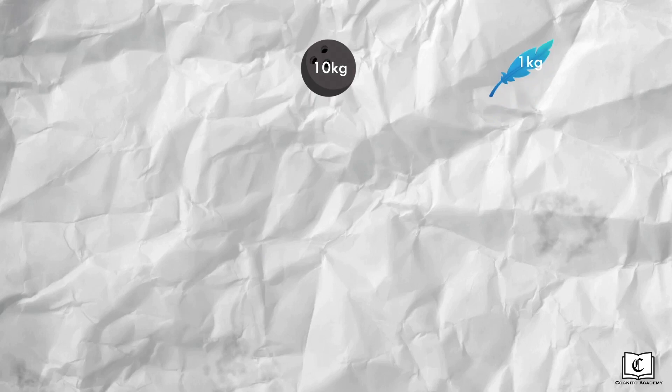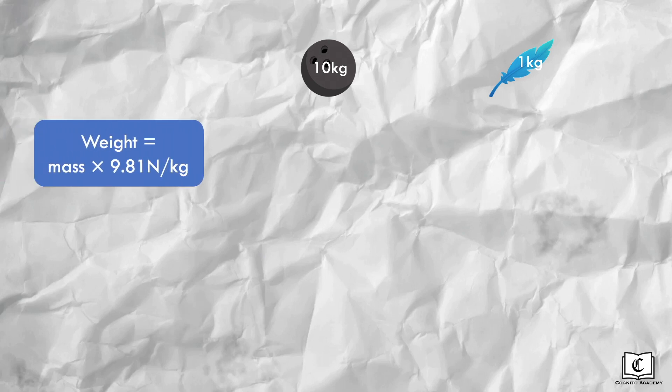Mathematically, let's see why acceleration is similar for both objects regardless of mass. The bowling ball is 10 kilograms and feather is 1 kilogram. We know that gravitational field strength on Earth's surface is 9.81 newtons per kilogram. Hence, for every kilogram, it experiences a weight of 9.81 newtons. Hence, we multiply both masses by 9.81 newtons per kilogram to get their weights.